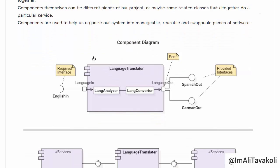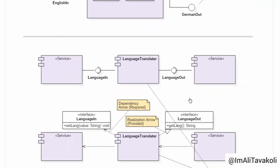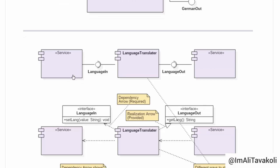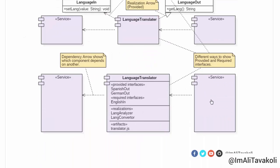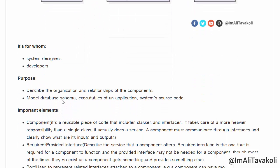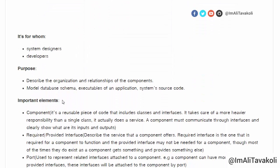Here is an example of a component diagram. This is a component, and these two are the parts of the component — they can be classes or they themselves can be components too. This is what we call a port, this is a required interface, and these two are provided interfaces, which we will explain in more detail later. These are some components connected together, and we can show them in different ways.